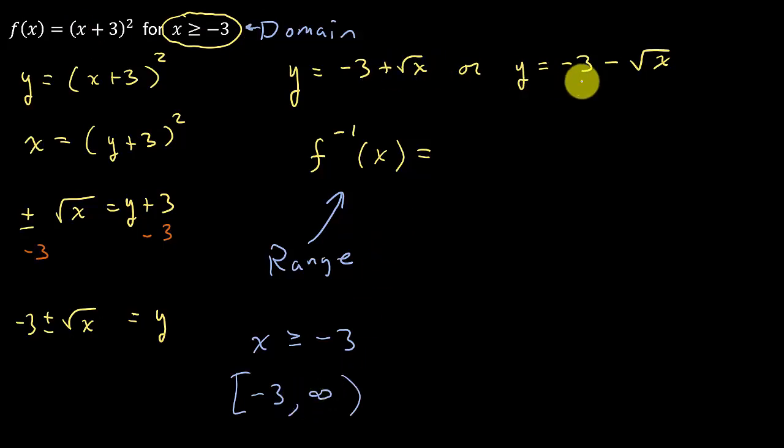Well, we need this to be the range of our inverse. So which one of these functions is going to give us a range, that means the output, right, of this? Well, it's going to be this one, because if you look at negative 3, because remember, whenever you take the square root of something, you're always getting a positive number, zero or a positive number.